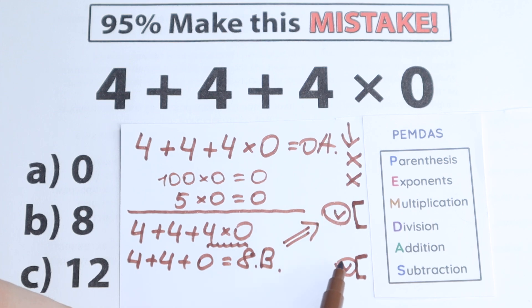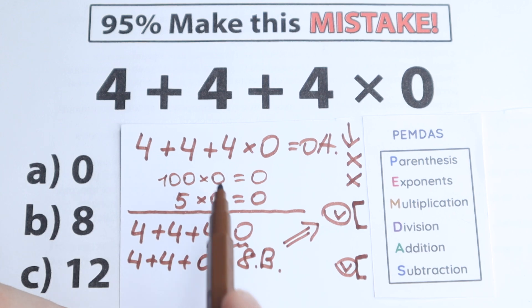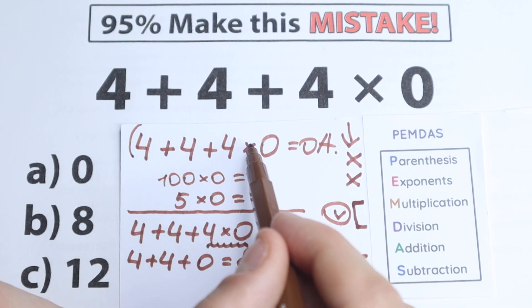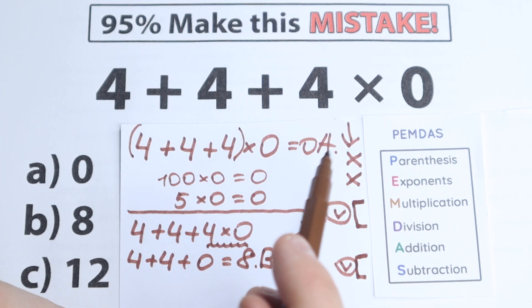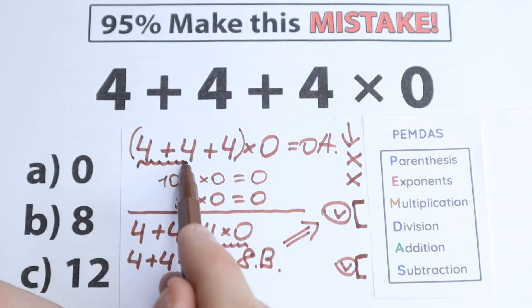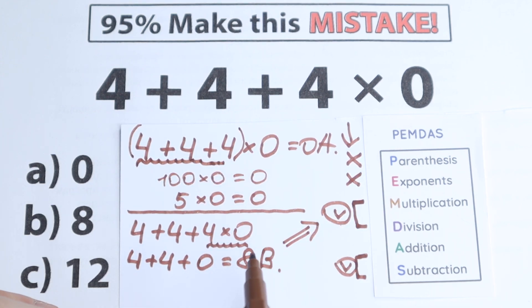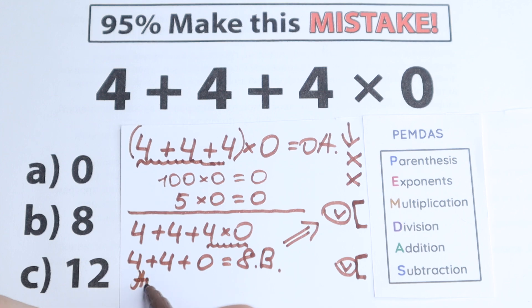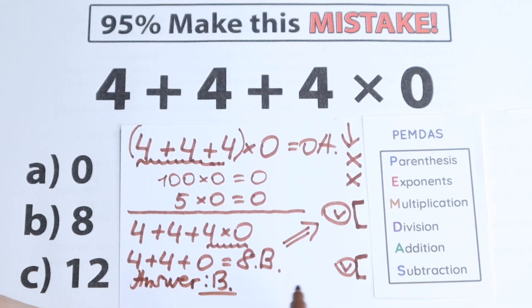Here's the trick though: if you put parentheses around the addition — (4 plus 4 plus 4) times 0 — then you can say 0 is correct, because you start from the parentheses and get 12 times 0 equals 0. But since we don't have any parentheses in the original question, the correct answer is option B — 8.